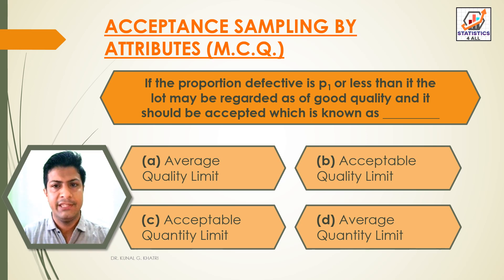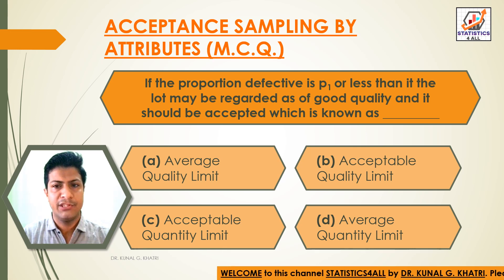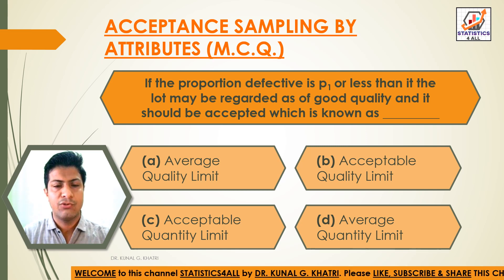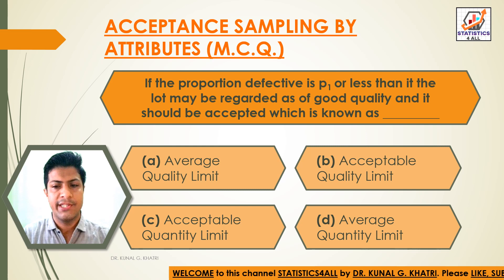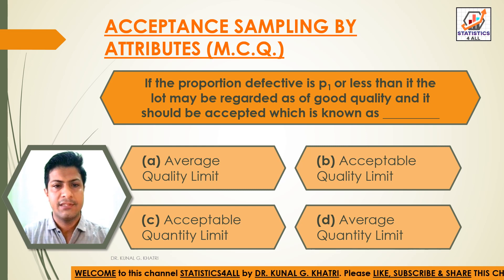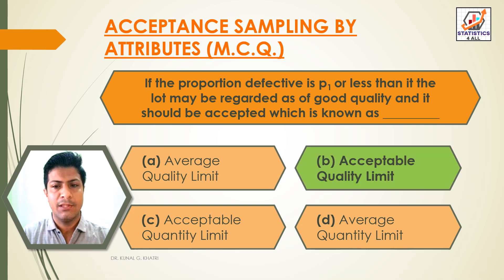Question 18: If the proportion defective is P1 or less, the lot may be regarded as of good quality and it should be accepted. This is known as — Option A: Average quality limit. Option B: Acceptable quality limit. Option C: Acceptable quantity limit. Option D: Average quantity limit. The answer is Option B — Acceptable quality limit.